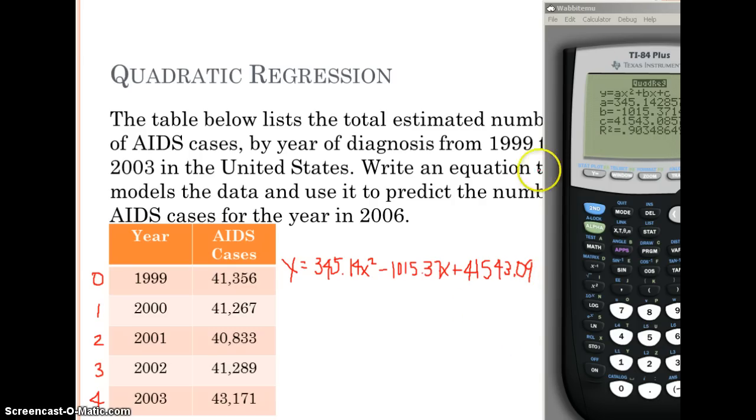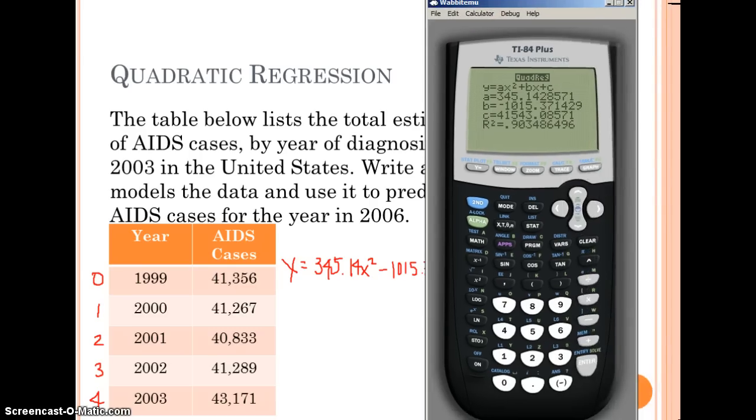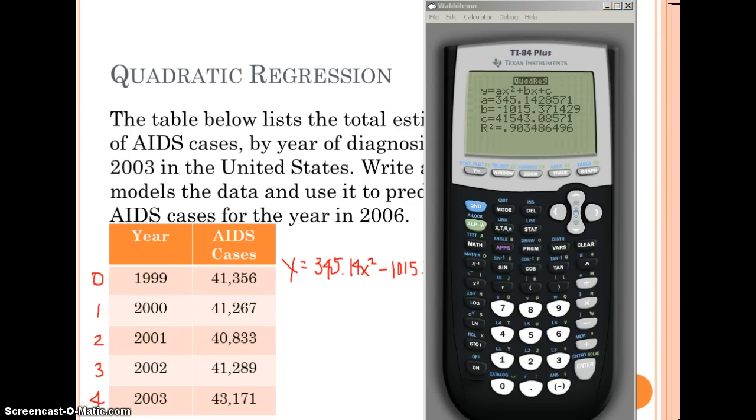There's our equation. Now we're going to graph this. We can go to our y equals and paste it in. Go to vars, go down to statistics number 5, go over to EQ, number 1, press enter, and there's our equation. You can look at our graph and it fits nicely between our points and averages it out.